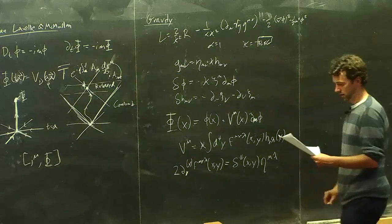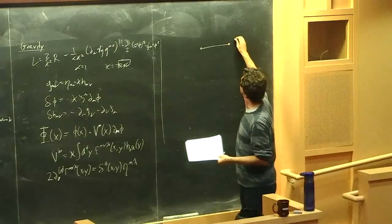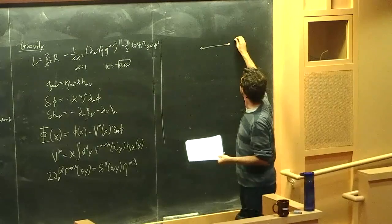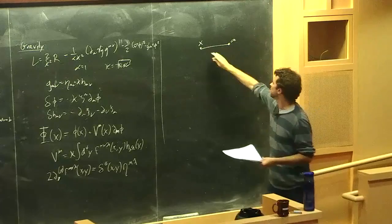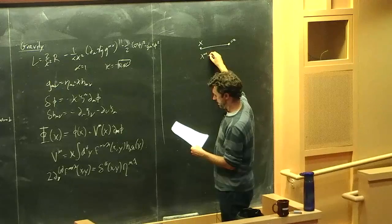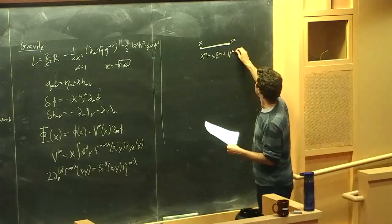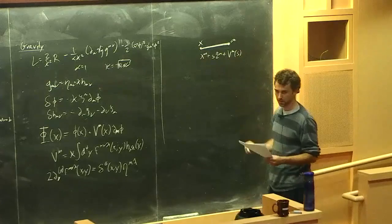We can do a similar thing to the QED case. We can look at a dressed operator, which now in order to cancel the transformation law requires some vector field V_mu times the derivative. The transformation law of this thing has to cancel out the transformation law of the field. We can write that as another one of these non-local integrals — now with more indices because it's a vector and depends on the metric. Gauge invariance demands that its derivative gives a delta function.